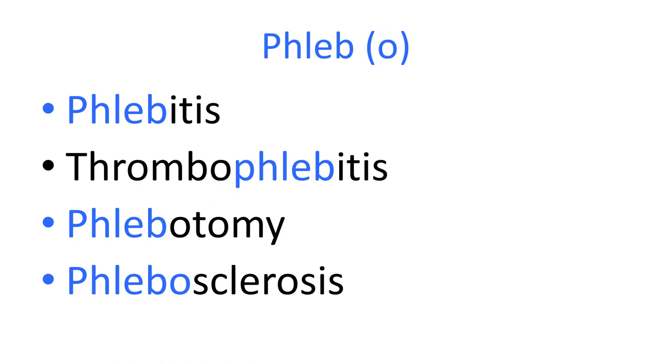This brings us to the last section — terminology relating to the venous system. A vein is any vessel carrying blood towards the heart. There are systemic veins carrying blood from the body back to the heart, and pulmonary veins carrying blood from the lungs back to the heart. Phlebo- or phlebо- means to do with veins, from the Greek for blood vessel. So phlebitis — with the suffix -itis — is inflammation of the veins, sometimes called venitis. Both terms mean the same thing, but phlebitis is the more correct term.